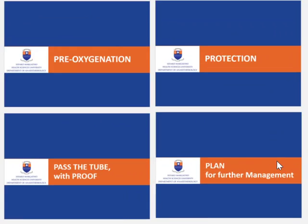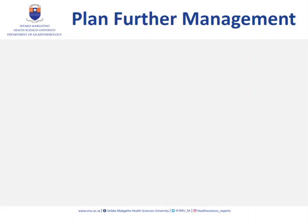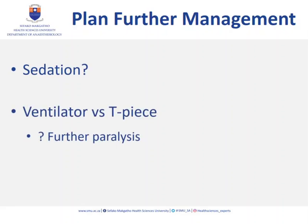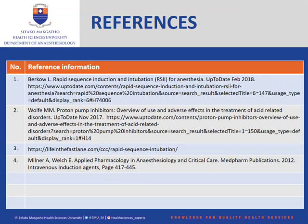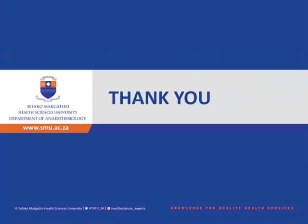Finally, we plan for further management. We need to decide: will we keep the patient sedated? Will they go on a ventilator or breathe spontaneously on a T-piece? If on a ventilator, do we need further paralysis? Is the patient being admitted, and are they going to ICU or high care? For further information, Life in the Fast Lane is a great quick reference, and the rest of the information is mostly from UpToDate. Remember the seven P's of rapid sequence intubation — I hope RSI will be quick and easy for you in the future.